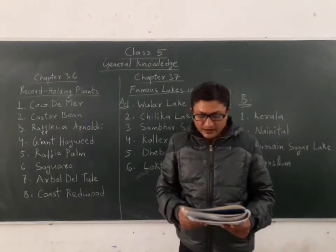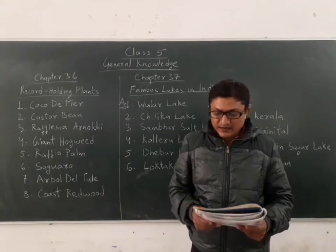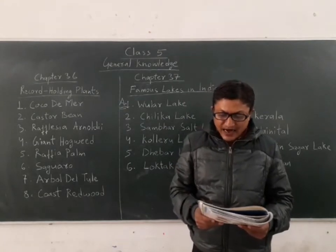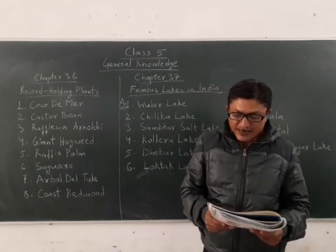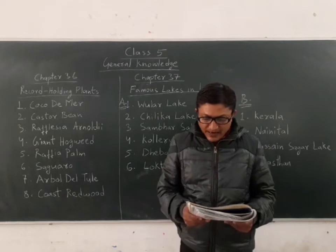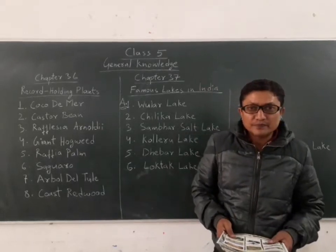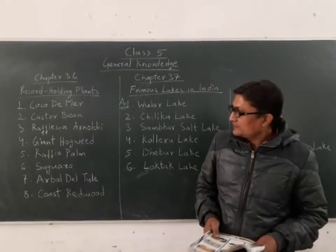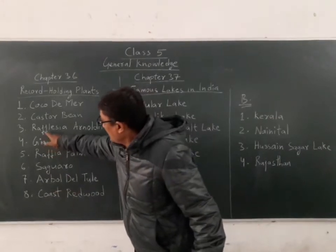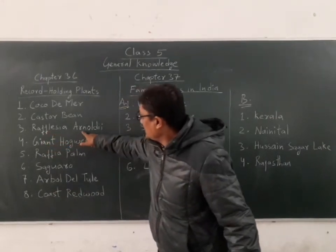Third: it is the largest plant that attains a diameter of nearly a meter and can weigh up to 11 kg. The answer is Rafflesia arnoldii.